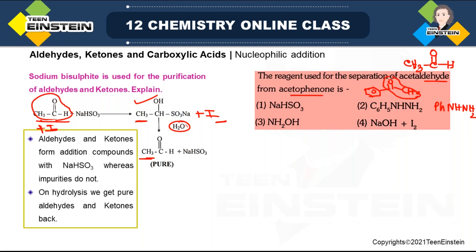Phenylhydrazine can react with any of these two carbonyl compounds, whether ketone or aldehyde. NH₂OH (hydroxylamine) is also a derivative of ammonia — if you replace one hydrogen of ammonia with an OH group, you get NH₂OH. Ammonia and its derivatives can act as nucleophiles in nucleophilic addition; that will be discussed separately. Right now, focus on NaHSO₃, because that is the reaction we discussed last time. The actual nucleophile in NaHSO₃ is SO₃⁻, which is large in structure.